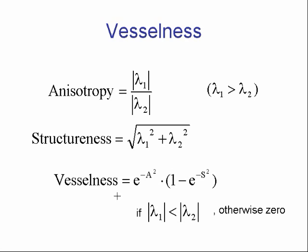Now, vesselness — or probability of the pixel belonging to a vessel — is a value mapped between 0 and 1, and this is big only if both anisotropy and structuredness are big. This constraint should be noted because we have dark objects on a light background. This inequality should be reversed if you have an image of dark background and light objects.